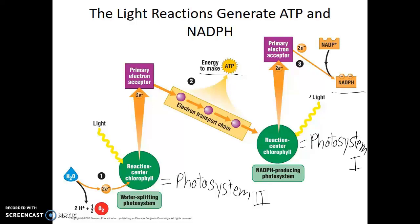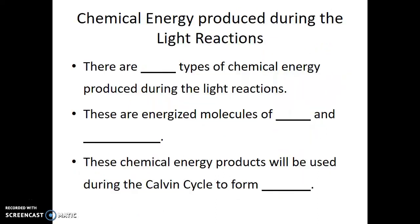Molecules of ATP and molecules of NADPH are the two forms of chemical energy made during the light reactions. These energized molecules of ATP and NADPH will be used during the Calvin Cycle to form sugar.